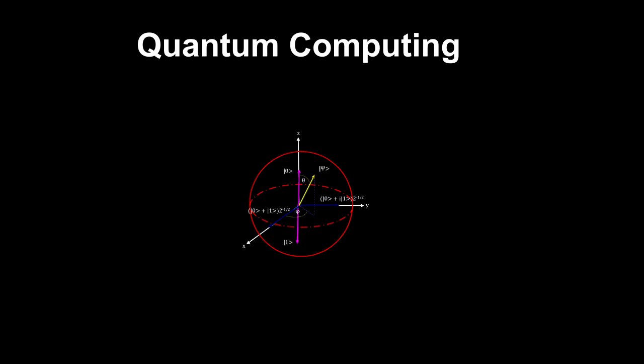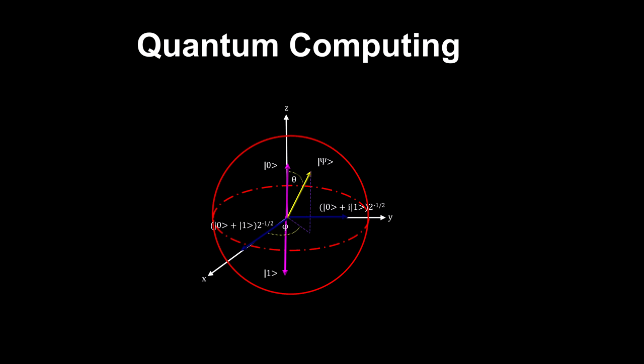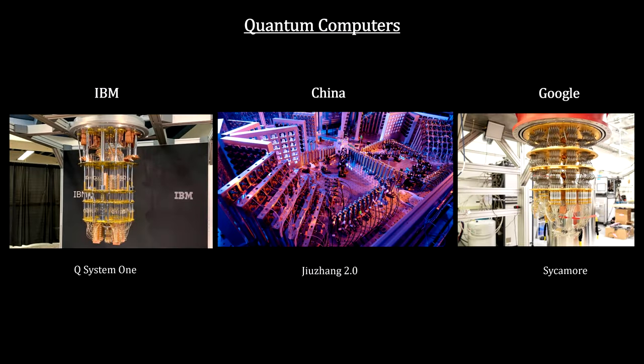Quantum computing is doing just that for quantum linear superposition and entanglement. There is an amazing amount of work around the world going into the development of quantum computers and their subsystems. Here's just three of them.